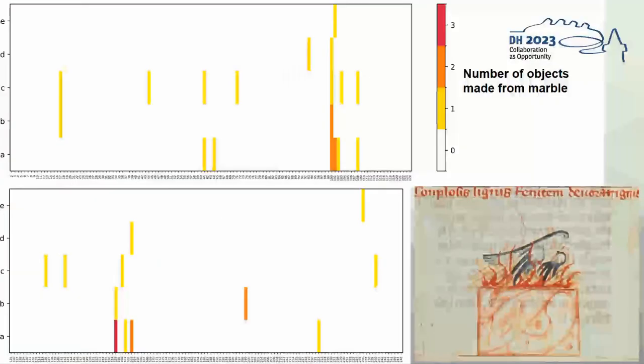So here you can see in two rows the images from page 2 to 248 with the five image fields A to E and the colored bars visualizing how often marble is represented in each picture field.